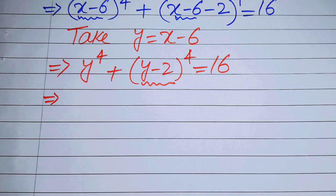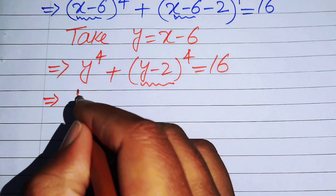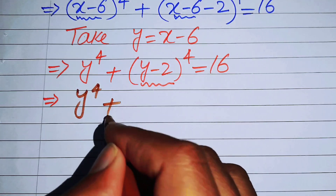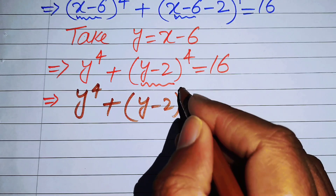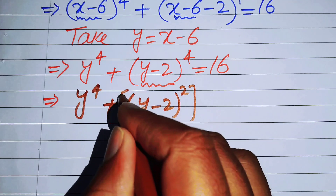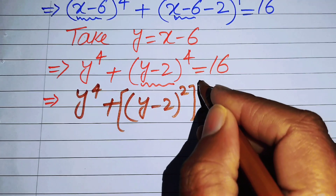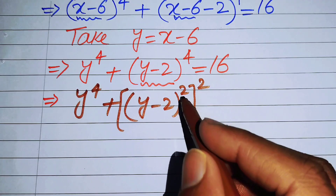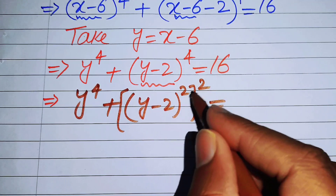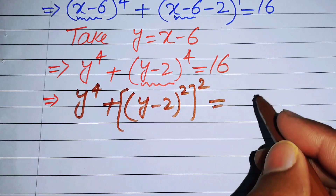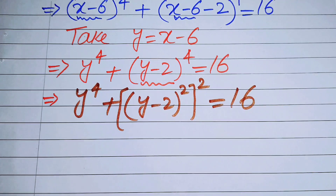We write the expression as y^4 + [(y - 2)^2]^2, breaking the exponent 4 as 2 squared, because multiplying those two exponents gives 4. This equals 16.